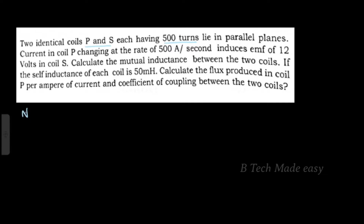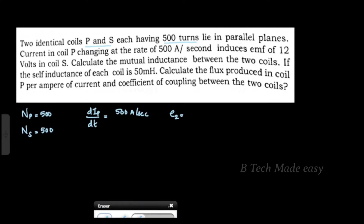First, the number of turns in coil P, which is NP, equals 500 turns. The rate of change of current in P is dIP/dt, which equals 500 Ampere per second. This induces EMF in coil S, which we call E2 or ES. ES equals 12 V.